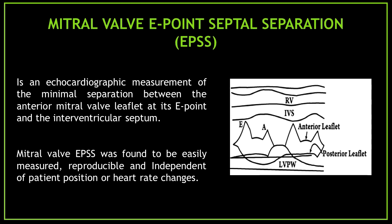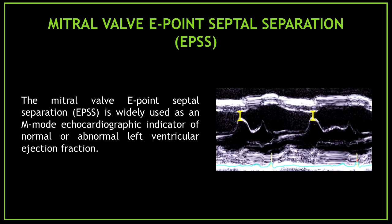Let's start with the definition. The mitral valve E-point septal separation is an echocardiographic measurement of the minimal separation between the anterior mitral valve leaflet at its E-point and the interventricular septum. It was found to be easily measured, reproducible, and independent of patient position or heart rate changes. It is widely used as an M-mode echocardiographic indicator of normal or abnormal left ventricular ejection fraction.